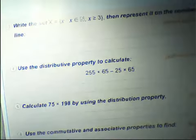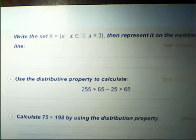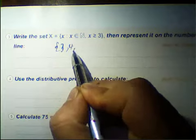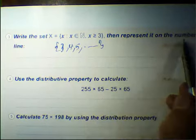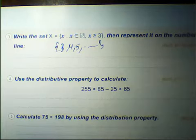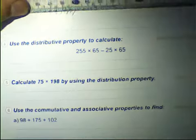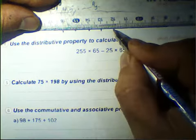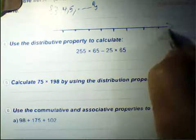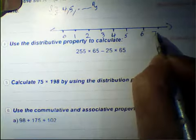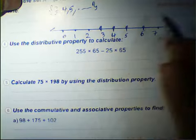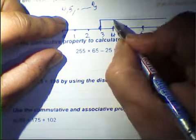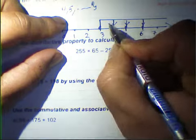Question number 3: use set notation. x equals the set of x such that x belongs to N and x is greater than or equal to 3. We can write 3, 4, 5 and so on — it is an infinite set. Then represent it on the number line: use a ruler to draw the number line: 0, 1, 2, 3, 4, 5, 6, 7 and so on. Draw a line segment perpendicular to the number line at each marked point.